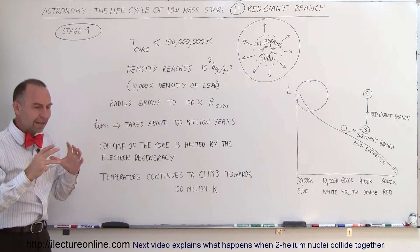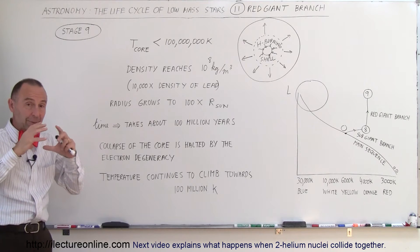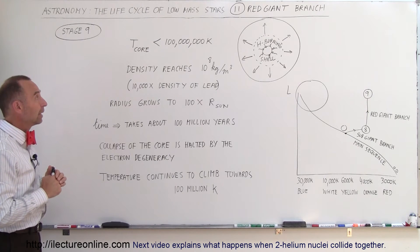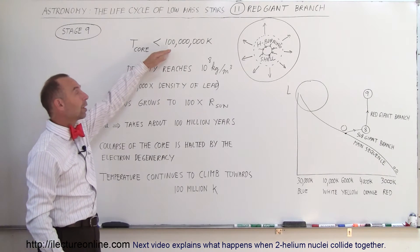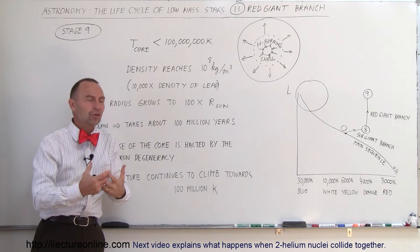So, core is extremely dense. The collapse of the core has been halted by electron degeneracy. Core temperature is still below 100 million Kelvin, because at 100 million Kelvin, helium will begin to fuse.